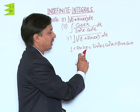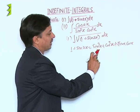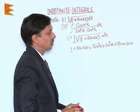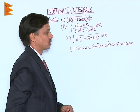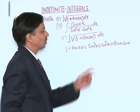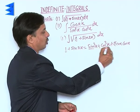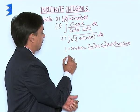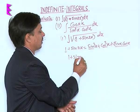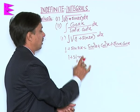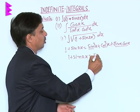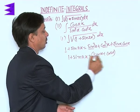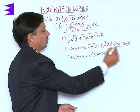Ultimately, 1 plus sin 2x becomes sin²x plus cos²x plus 2 sin x cos x. This part sin²x plus cos²x plus 2 sin x cos x can be written as (sin x plus cos x) whole square.